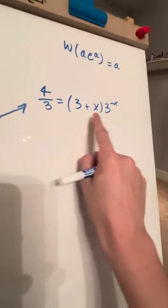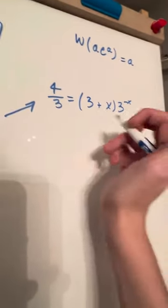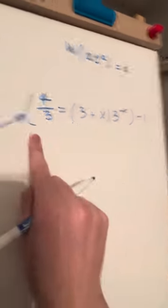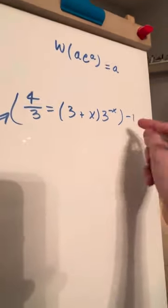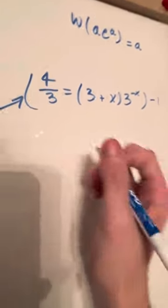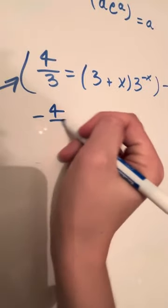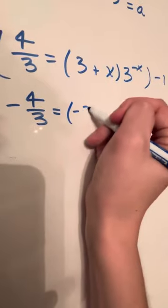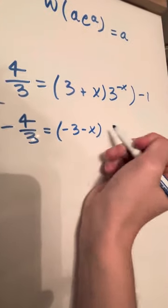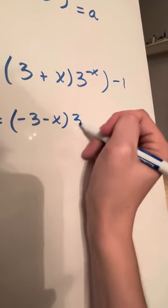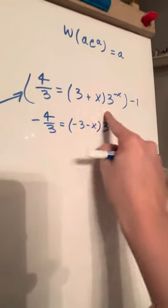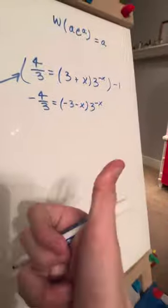Well, we want a negative x here. So all I'm going to do is multiply this entire thing by negative 1. So we get negative 4 over 3 is equal to (negative 3 minus x) times 3 to the power of negative x. We have to distribute the negative 1 to everything in the parentheses.